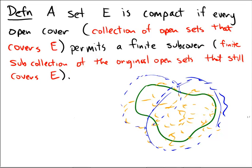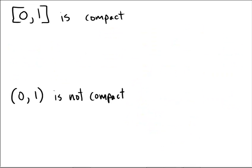Now that's pretty abstract, so let's look at a couple of finite examples here. [0,1], the closed interval, is compact,